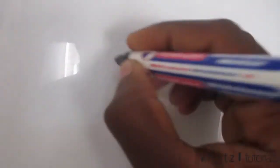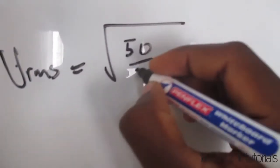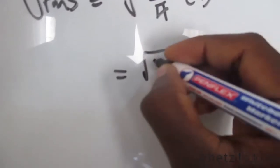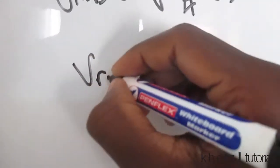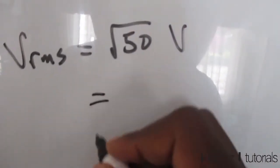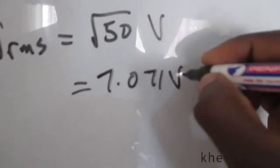Our Vrms is going to equal the square root of 50 divided by pi multiplied by pi, which is basically just the square root of 50. So our Vrms equals square root of 50 volts, and the decimal value for that is 7.071 volts.